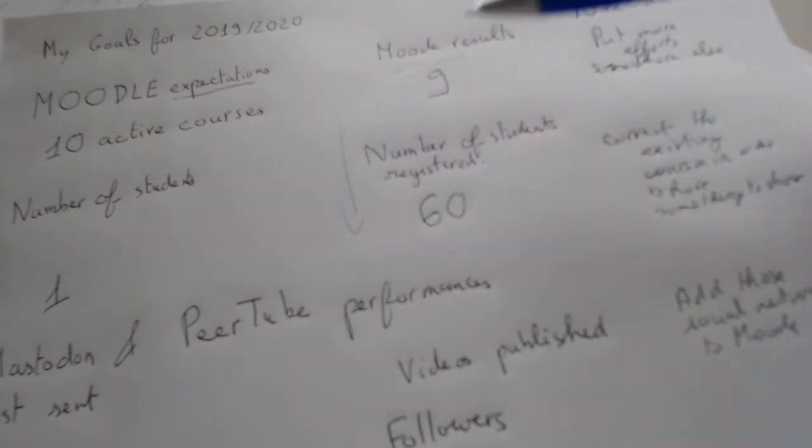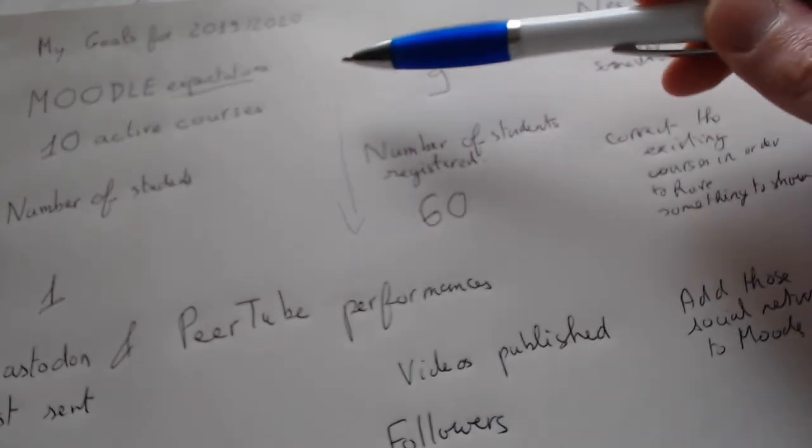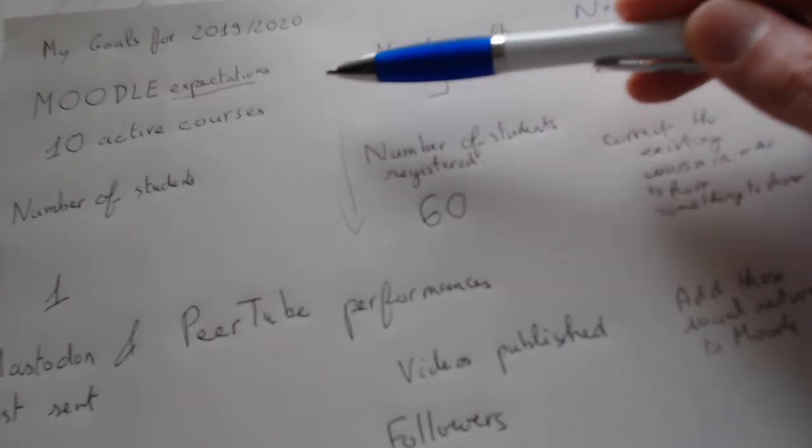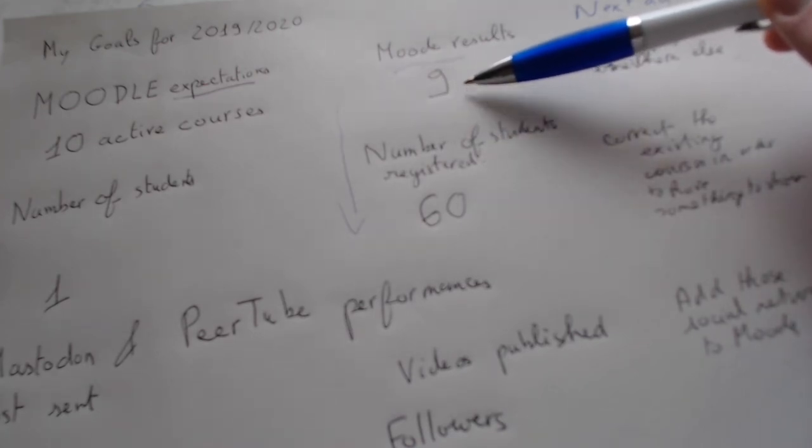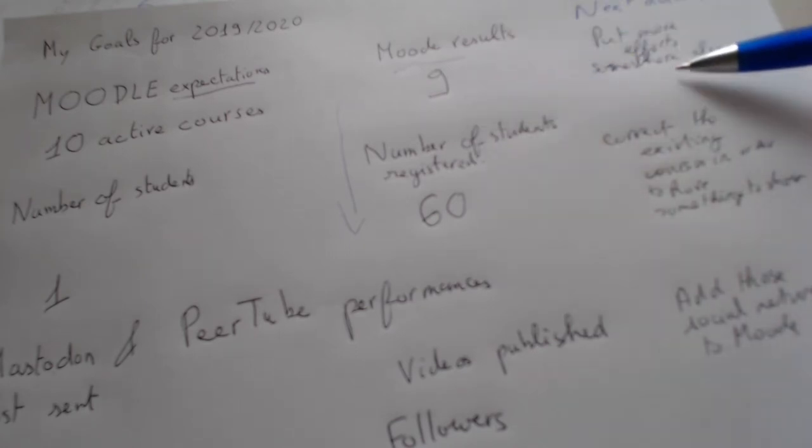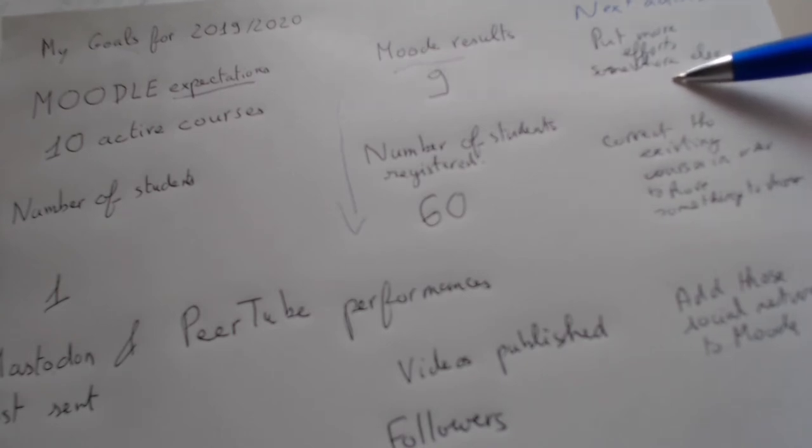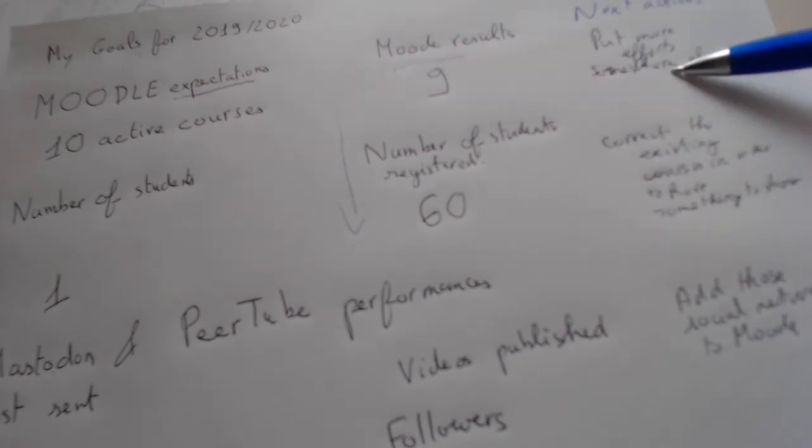Let's imagine for example my expectation was to have for my platform at least 10 active courses, and I'm already at the end of the first quarter of 2020 and I already have nine active courses. So I'm well in advance, so I should start to stop my creating learning courses and I should start to put more efforts into something else.